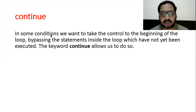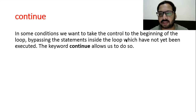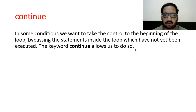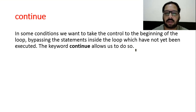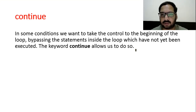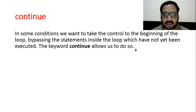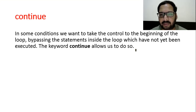Continue keyword: in some conditions we want to take control to the beginning of the loop, bypassing the statements inside the loop which have not yet been executed — the keyword continue allows us to do so. If you have written a for loop or while loop and want the statements after a particular statement not to execute and the loop to skip one rotation, you use the continue keyword. Break terminates the loop, but continue skips one rotation of the loop when executed, and the following rotations execute normally.